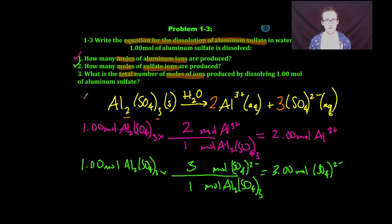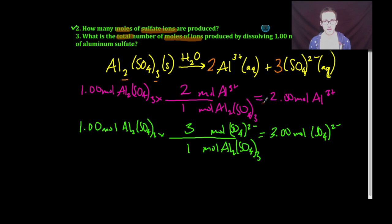Question number 3 is asking us, what is the total number of moles of ions produced by dissolving 1 mole of aluminum sulfate? Well, we made 2 moles of aluminum ions and 3 moles of sulfate ions for a total of 5.00 moles of ions. Boom. Question number 3, answer.